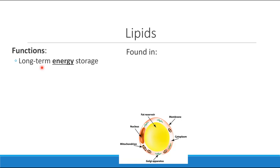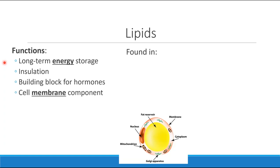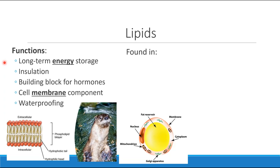In your body, we have cells that are literally full of lipids, and their job is to store extra energy for when we need it later. But lipids also do several other functions in the body, including insulating and preventing heat loss, helping us to build hormones, helping us to build our plasma membrane, and also functioning in waterproofing.